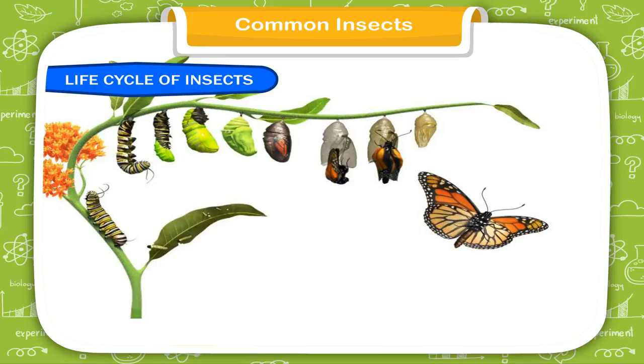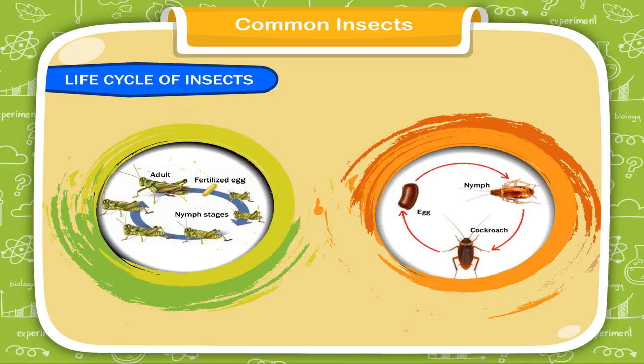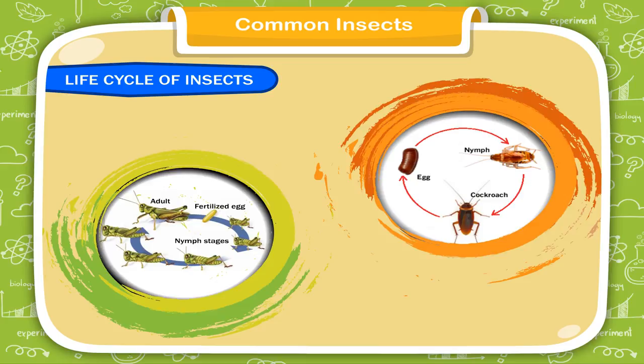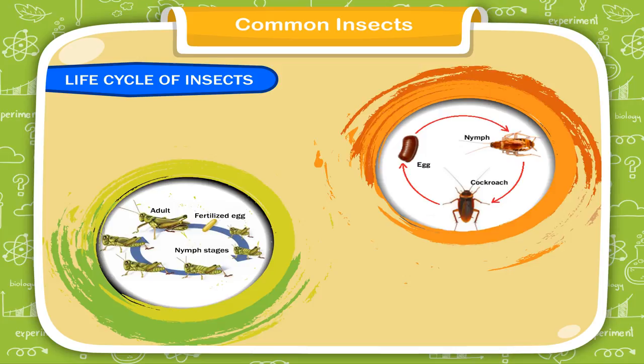Insects like grasshoppers and cockroaches pass through three stages in their life cycle: egg, nymph, and adult. The young insect that comes out of an egg does not have wings — it is called a nymph. The nymph sheds its skin many times and grows into an adult.